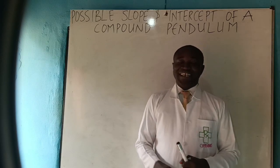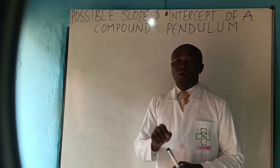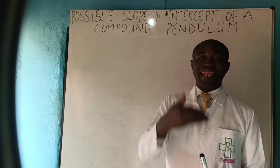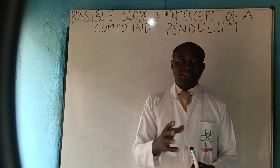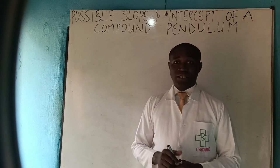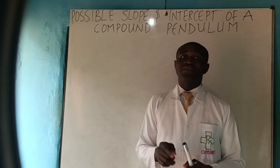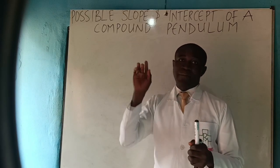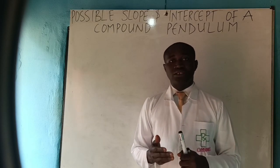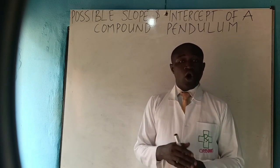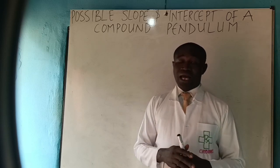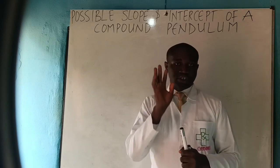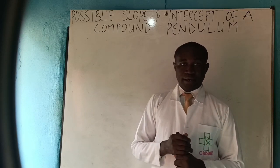Welcome to today's class. In this video we want to discuss possible slopes and intercepts you can get from a compound pendulum experiment. If you check our channel you will notice that we have posted an experiment of a compound pendulum where we showed how to get the slope and intercept without performing the experiment. But the question is: how do you know if you are correct or not? This video will try to take care of that problem.